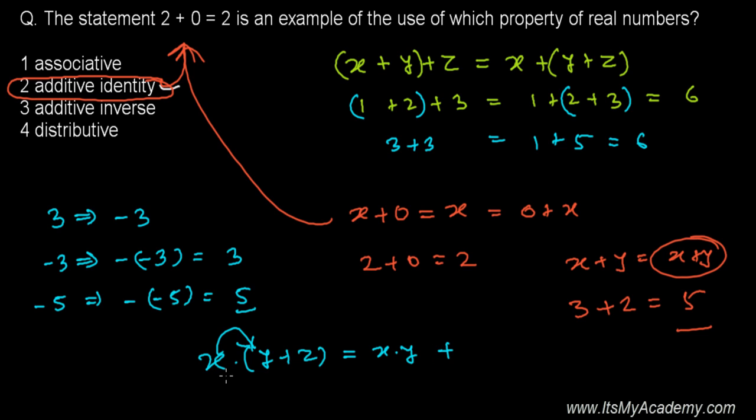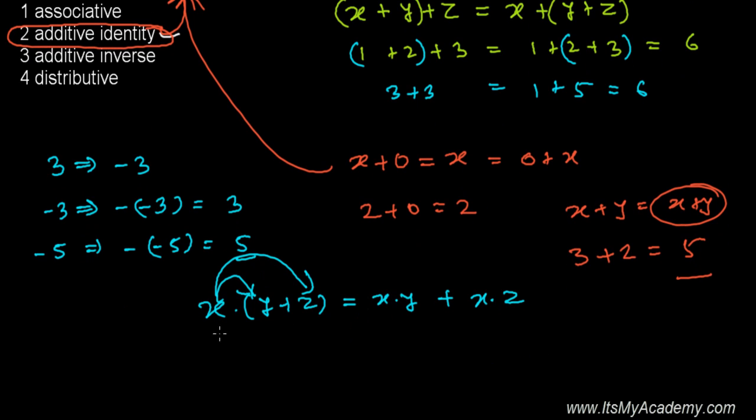Then you can distribute: first x times y, it's going to be x times y, and then plus the next time x times z. The distributive property is like 2 times (3 + 4), then you can first multiply 2 and 3, that's 2 times 3, and next time you can write 2 times 4.